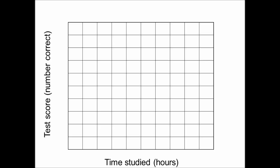The way that we know that is that time studied is what you are able to control — it's your independent variable. Your dependent variable depends on your time studied, so the score that you got on your test depends on the time studied. The time that you spent studying does not depend on your test score. We would also need a title; a lot of times we can just title this our y-axis versus our x-axis, so in this case: test score versus time studied.